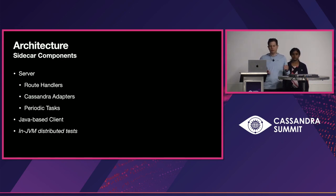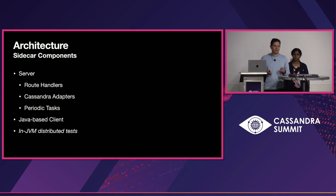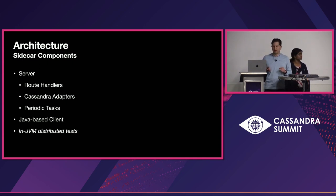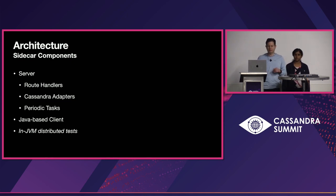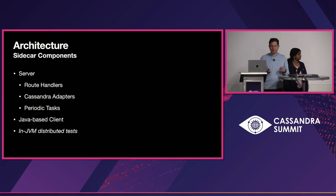For example, we do periodic health checks to the database. The Java client was recently introduced as well. It is a feature-rich client that allows us to do retries with retry policies and exponential back-off, and we handle different status codes from the server.